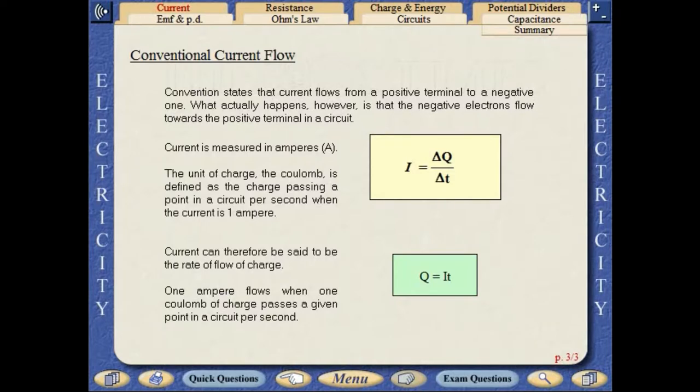Convention states that current flows from a positive terminal to a negative one. What actually happens, however, is that the negative electrons flow towards the positive terminal in a circuit.